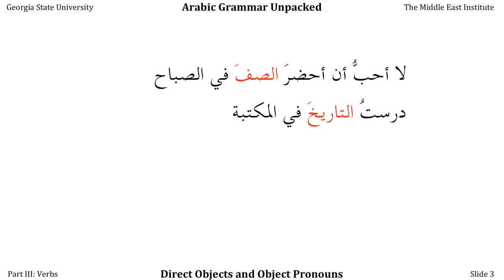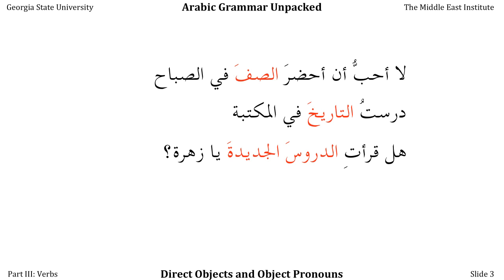In this example, دَرَسْتُ التاريخ في المكتبة, 'I studied history in the library,' التاريخ is the direct object of the verb دَرَسْتُ because it's what I studied — it received the action of the verb. In هَلْ قَرَأْتِ الدروس الجديدة يا زهرة, 'Hey Zahra, have you read the new lessons?' — the new lessons are the direct object of the verb قَرَأْتِ.